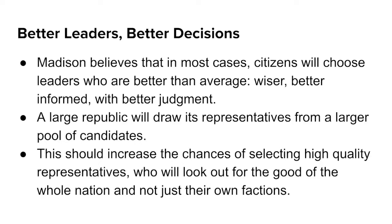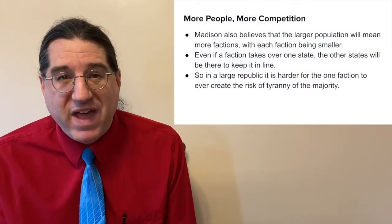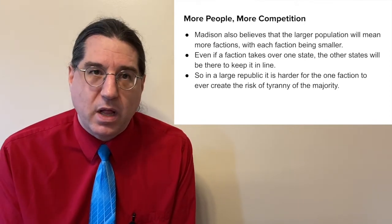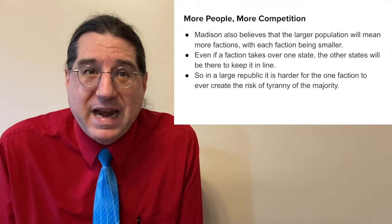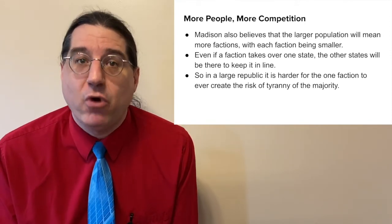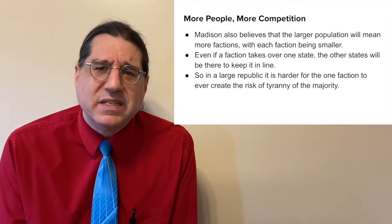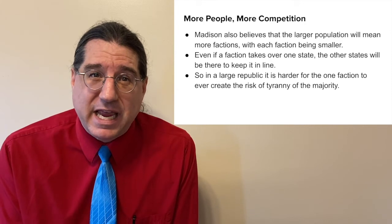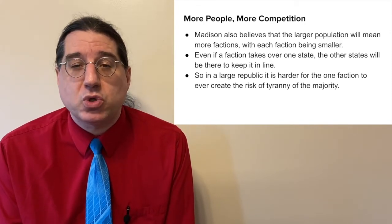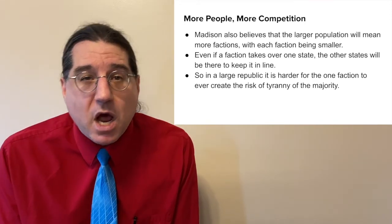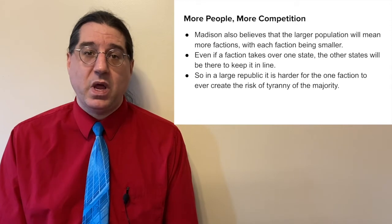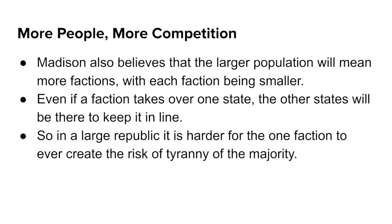Madison believed that people in different areas of the country would have different interests and therefore would form different factions. So even if a bad idea becomes popular in Pennsylvania, it would have difficulty catching on in Massachusetts and Virginia as well. Even if the representatives from Pennsylvania support this bad idea, the representatives from Massachusetts and Virginia can outvote them and defeat it. While critics of the Constitution worried that the large republic would be too diverse to be truly united and therefore too hard to govern, Madison claimed that size and disagreement were advantages — they would ensure that every faction would have to compete with every other faction, and none would be strong enough to dominate and take over the government. Thus the union would preserve the people's rights better than the state governments could, and ratifying the Constitution of 1787 would help create a more stable form of government that protected the people's rights.